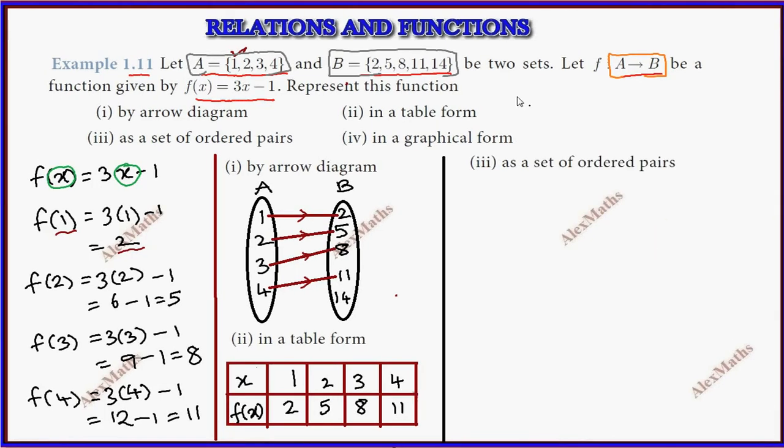Third, ordered pairs. So f equals (1,2), (2,5), (3,8), (4,11).